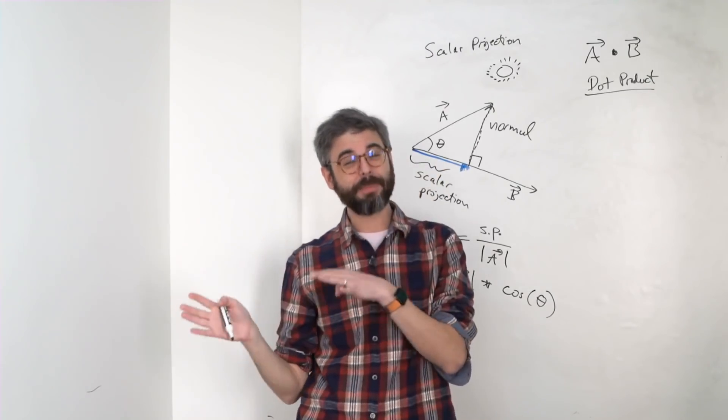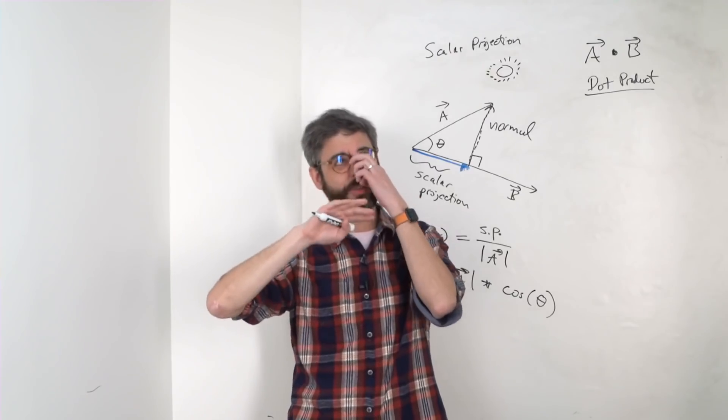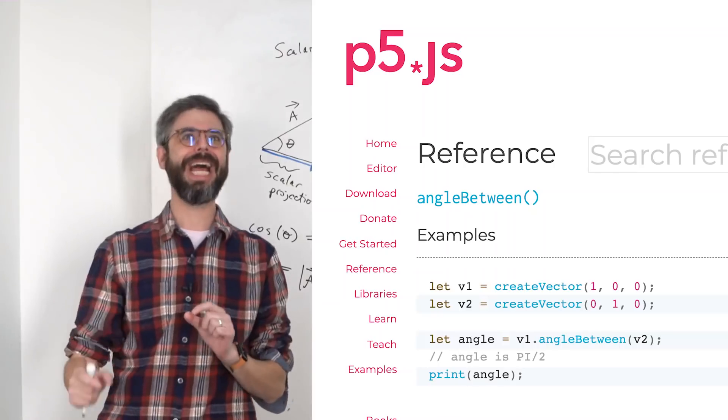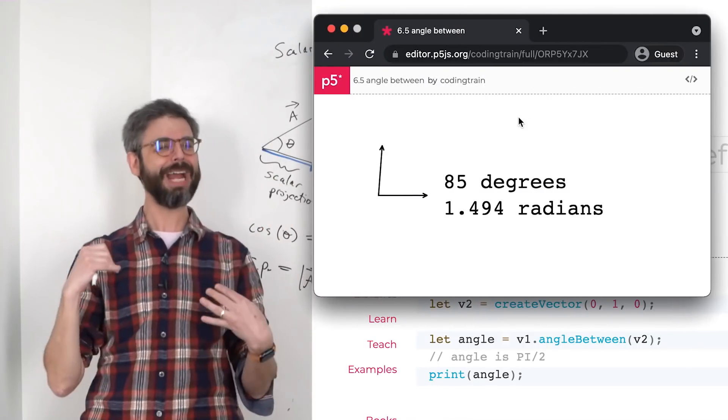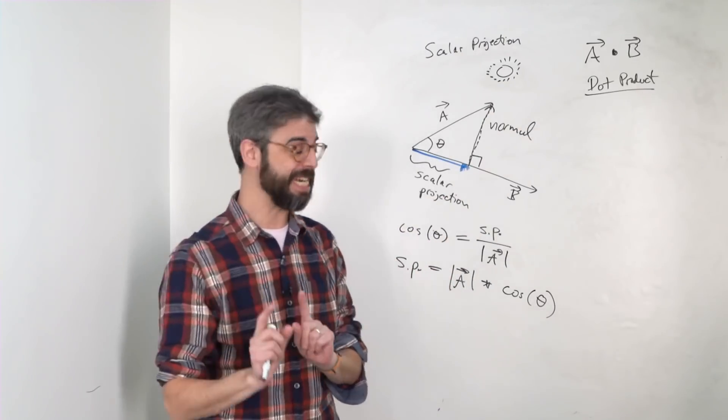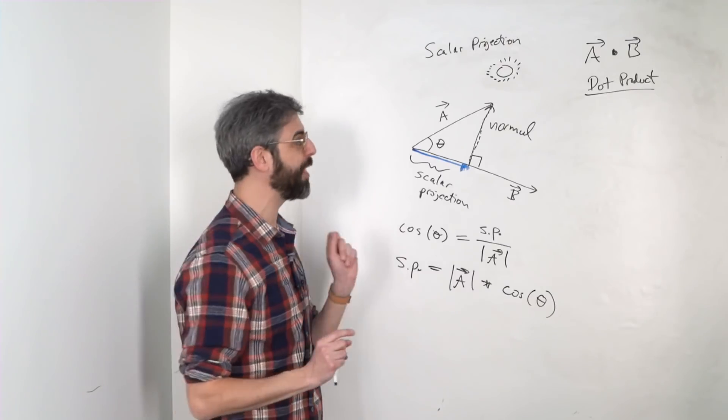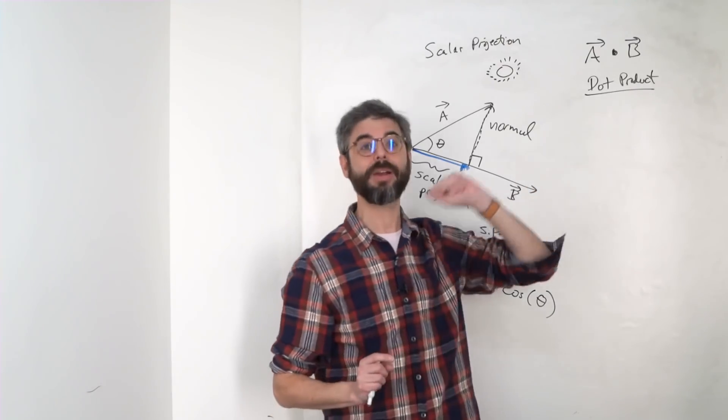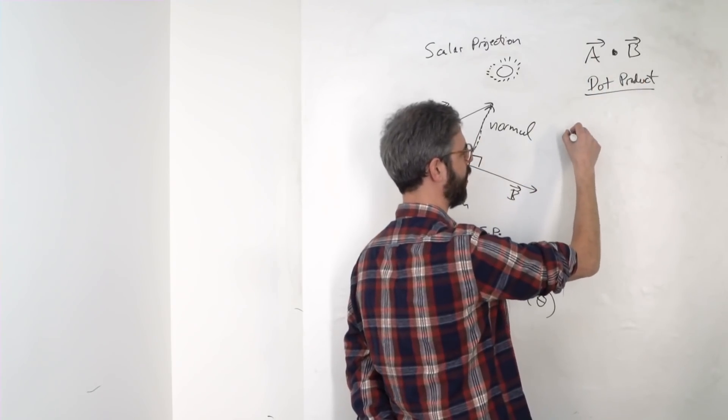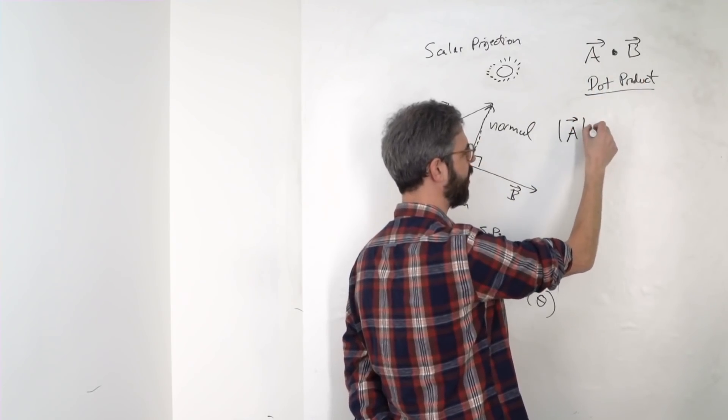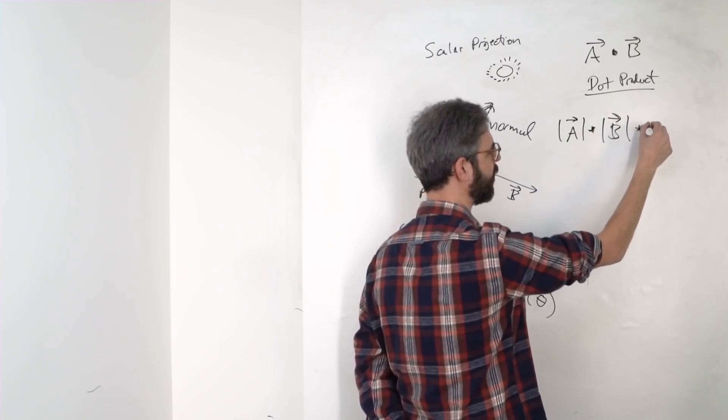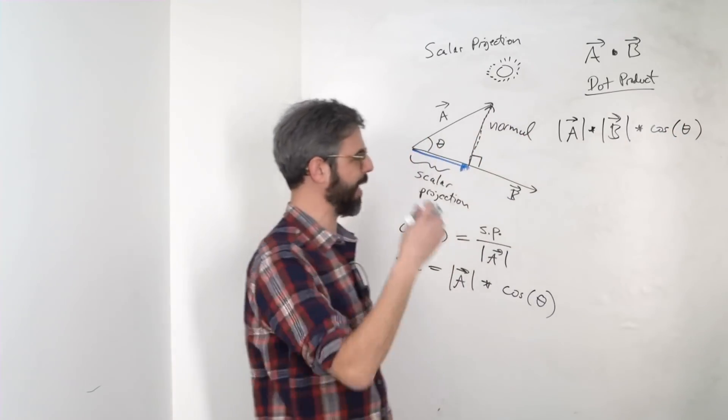The dot product is a mathematical operation between two vectors, typically referenced with a dot. And it's the key to unlocking the angle between two vectors. P5 actually has an angle between function which will give you the angle between two vectors using the dot product. But for our purposes here, I think the most useful thing is for me to define how to calculate the dot product.